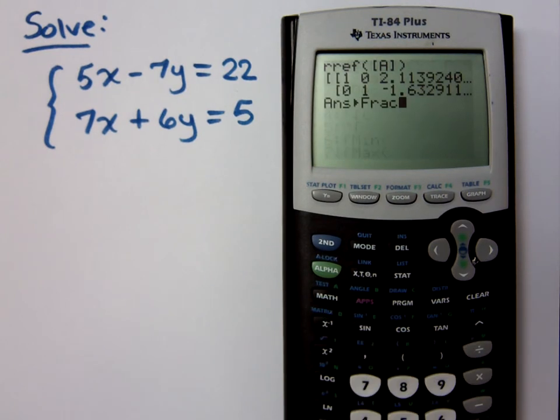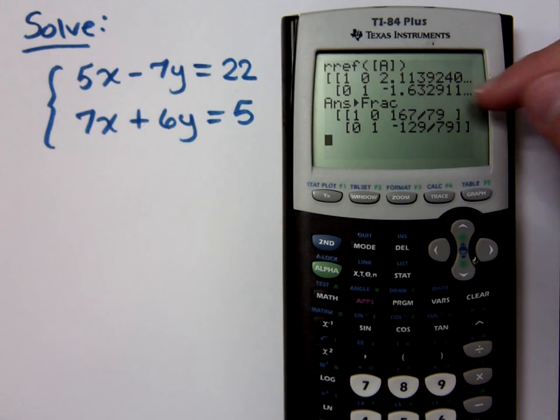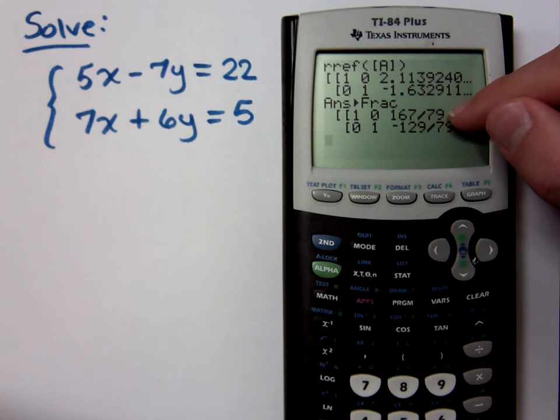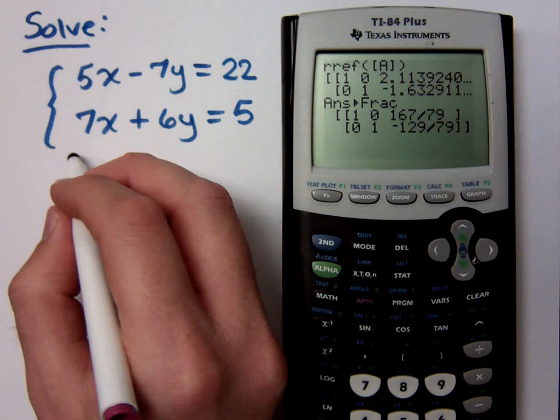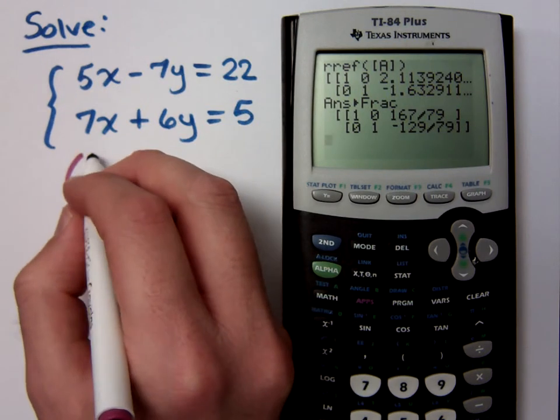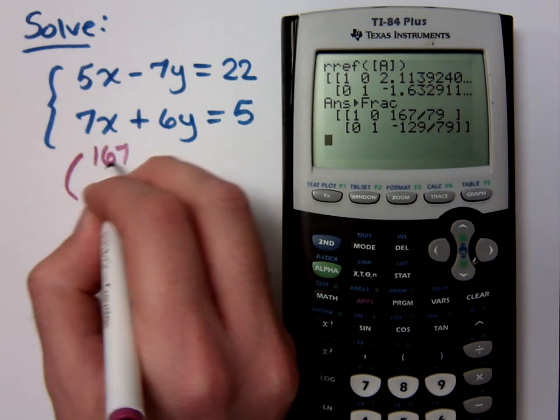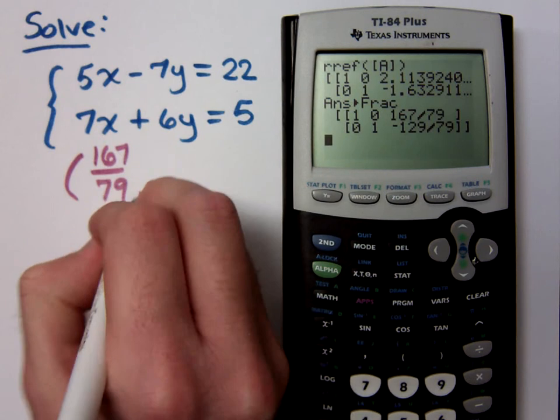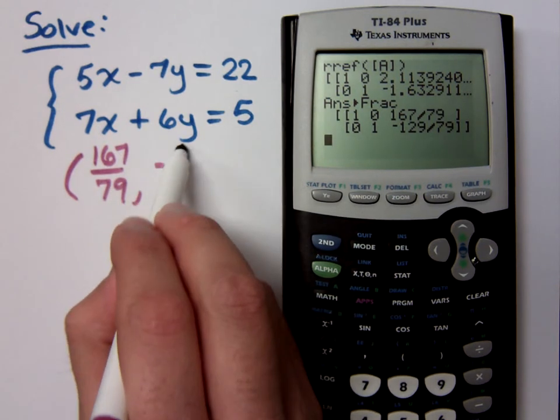Convert this guy to a fraction. You still have the same thing. 167 over 79. Excuse me, and the other fraction is negative 129.